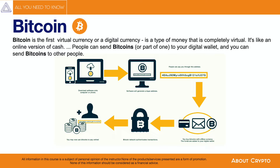Bitcoin was the first cryptocurrency, announced in 2008 and launched in 2009. It provides users with the ability to send and receive digital money — bitcoins, or BTC. What makes it so attractive is that funds cannot be censored, funds can be spent, and transactions can be made anytime from anywhere with zero cost.